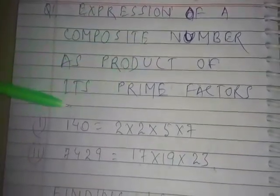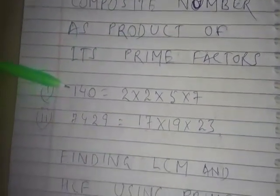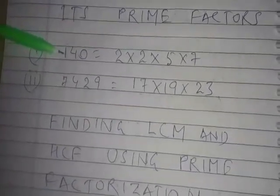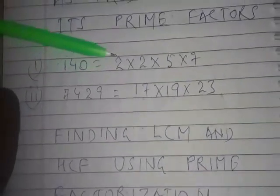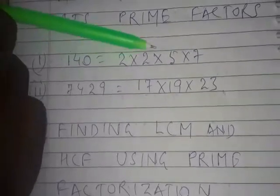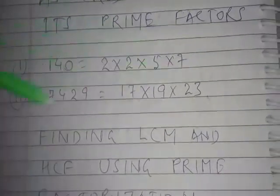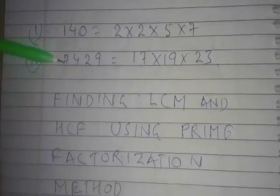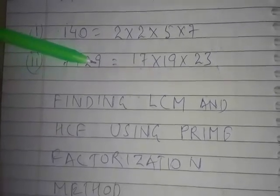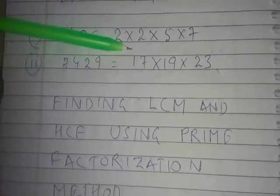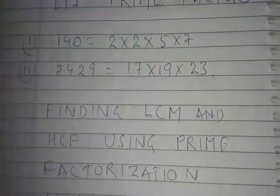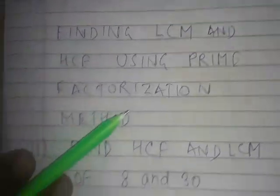Here are a few more examples of composite numbers expressed as products of prime factors. The first number is 140, expressed as 2 × 2 × 5 × 7. Another number is 7429, which has been expressed as the product of 17, 19, and 23.